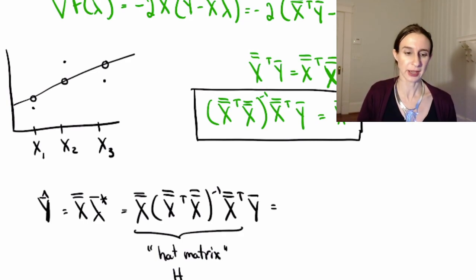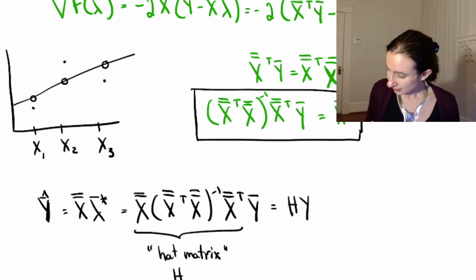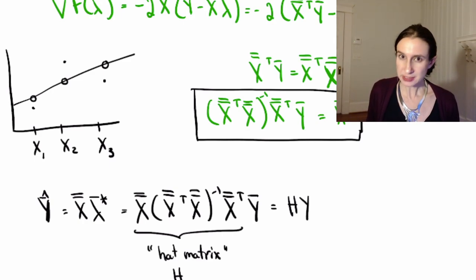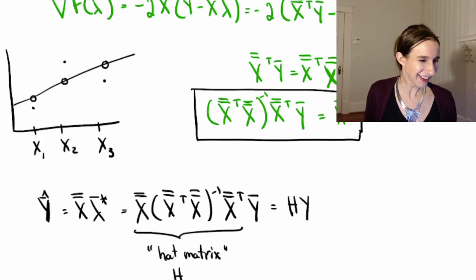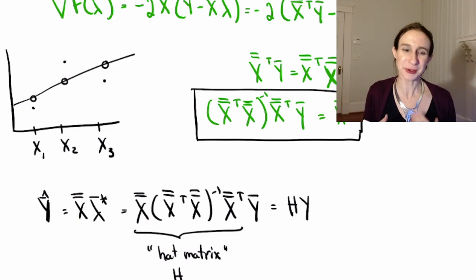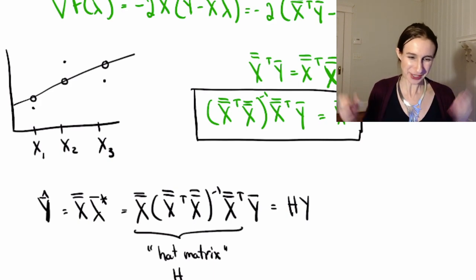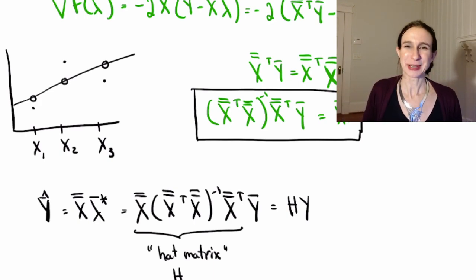Oh, I know why it's called a hat matrix. It's because if you multiply y by h, it makes it y hat. Oh, I should have thought of that before. That's really cool. Okay. Anyway, so, h you can think of as kind of a smoother of the y value. So, it takes y from y to y hat. All right. Thanks.